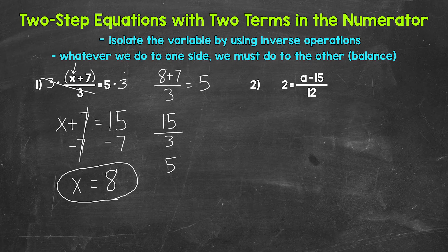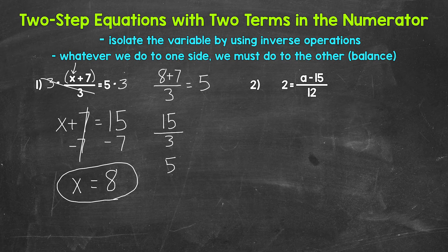Let's move on to number two, where we have two on the left side of the equation, and on the right side a minus 15 divided by 12. We have subtraction and division, but the subtraction is grouped in the numerator. We can even use parentheses to help picture that, though we don't have to write them.